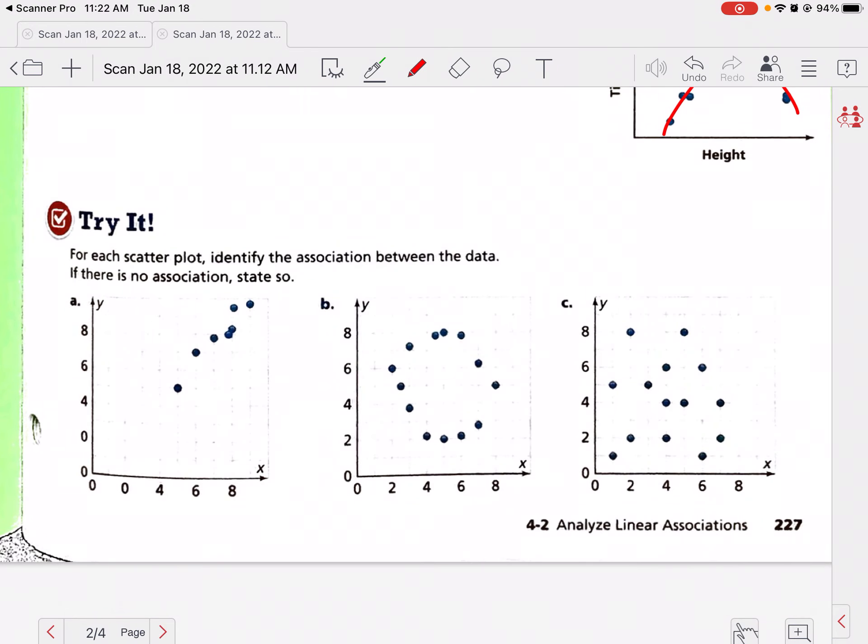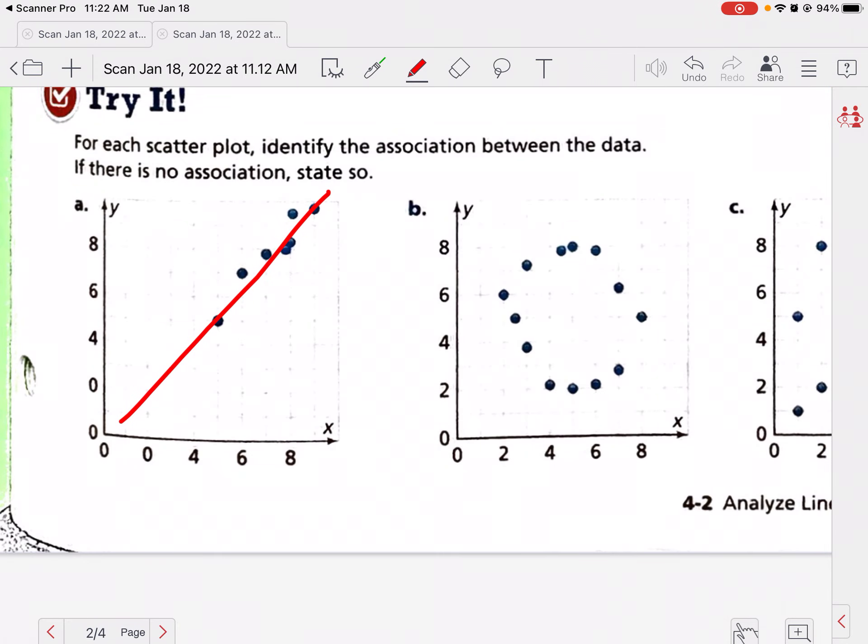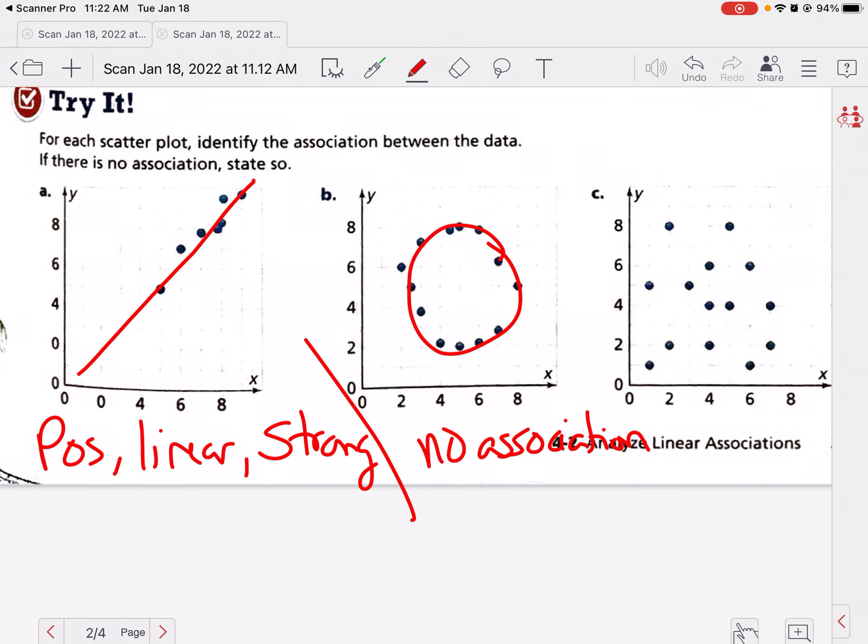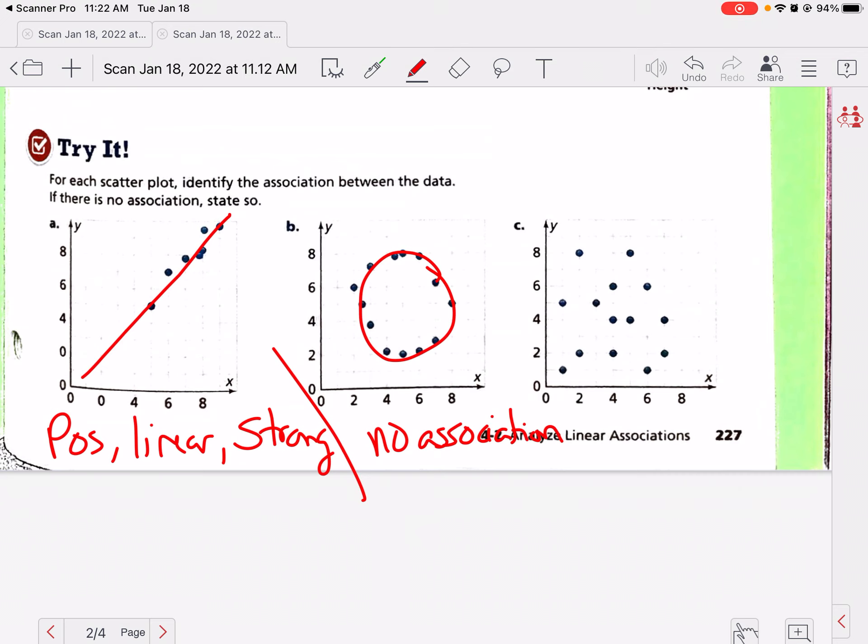So for each scatter plot, identify the association between the data. If there's no association, state that, and say if it's strong or weak. I'm going to draw my trend line here. What kind of association do you think that is? I would say that's positive, it's linear because it's a straight line, and I would say this is a fairly strong association. The points are all really close to that line. This one we have a circle. So there is no association here. It's a circle - there's not a positive association, there's a negative association. You could say it's non-linear because it's not a line.